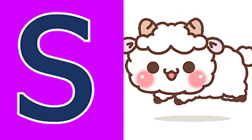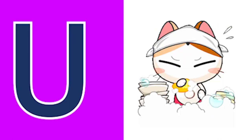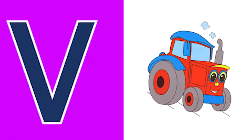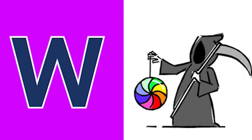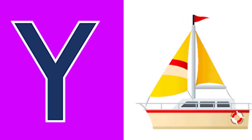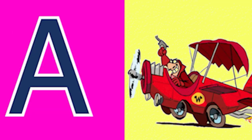S for sheep and T for top, U for utensil, V for van, W for wheel and X for xmas tree, Y for yacht and Z for zoom.